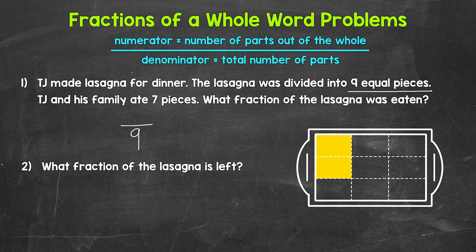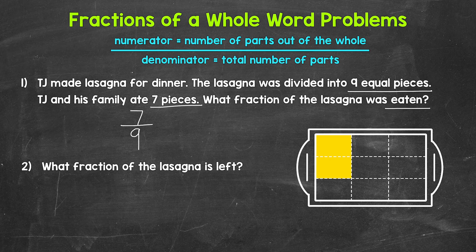Now we need the numerator. That's the number of parts out of the whole that we are interested in or focused on — the number of parts being talked about. Here we want the fraction of the lasagna that was eaten, so we need the number of pieces TJ and his family ate. That's seven. So seven is our numerator. Seven pieces out of the nine total pieces were eaten, so our fraction is seven ninths.